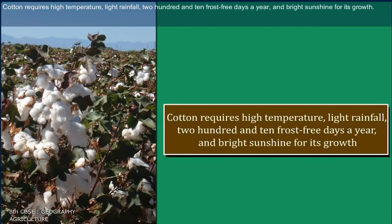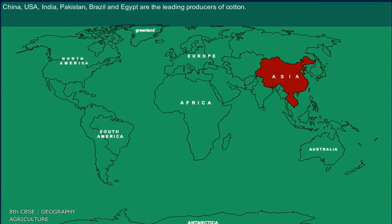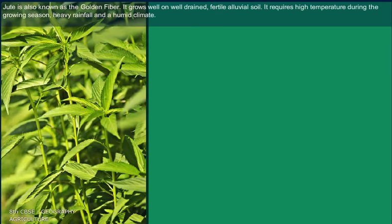Cotton requires high temperature, light rainfall, 210 frost-free days a year, and bright sunshine for its growth. China, USA, India, Pakistan, Brazil, and Egypt are the leading producers of cotton.